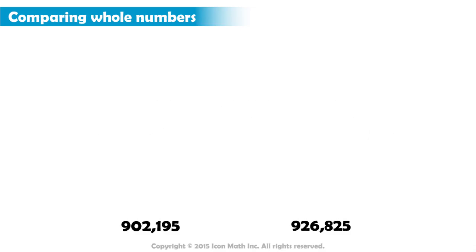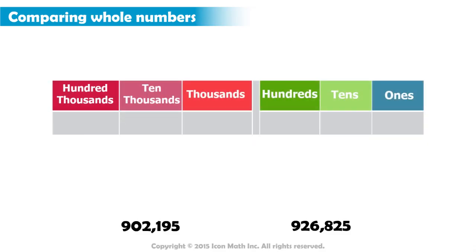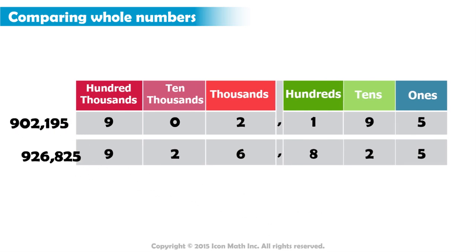To compare the two numbers, we insert the digits into a place value chart. A place value chart helps us see the value of each digit depending on its position in the number. Notice that we have two groups: the thousands group and the ones group.